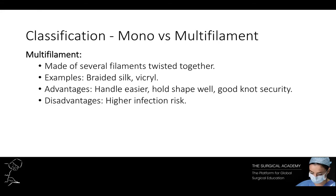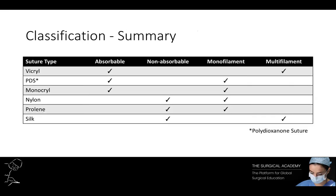Multifilament sutures, on the other hand, are made of several filaments twisted together. Examples include braided silk or vicryl sutures. They handle more easily and hold the shape of the knot in a secure fashion. However, they are associated with a higher infection rate. A table provides a concise summary of the various suture types and their characteristics.